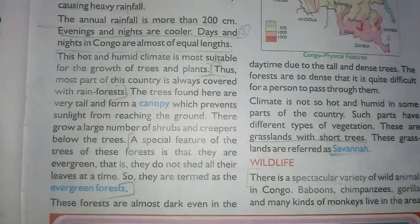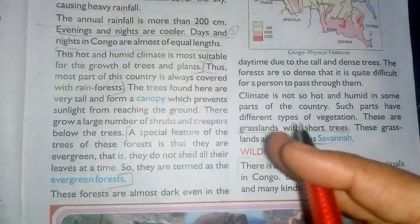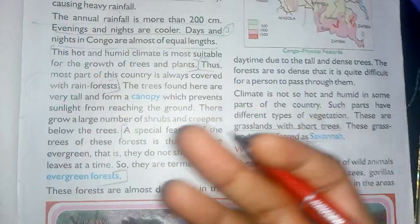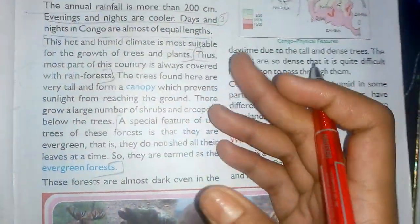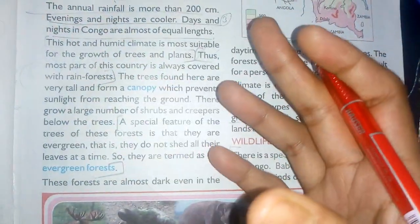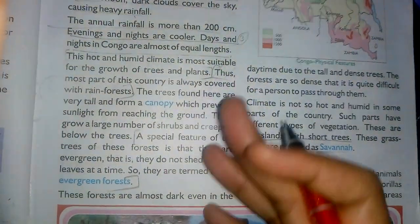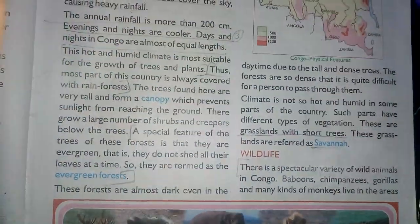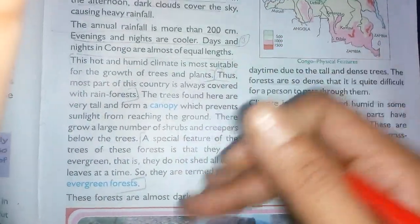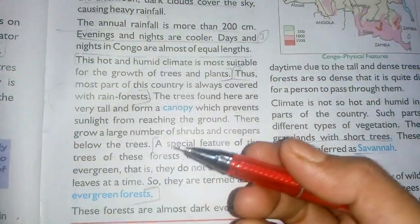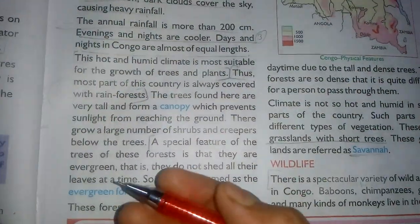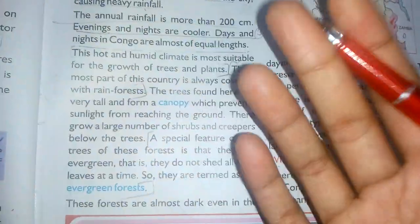A large number of shrubs and creepers are grown below the trees. Shrubs are small woody plants, smaller than a tree. Creepers are plants that grow along the ground, a wall, or trees. For example, pumpkin, watermelon, and money plant are creepers.